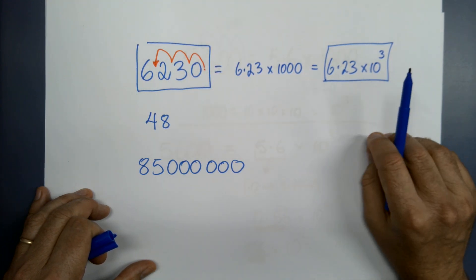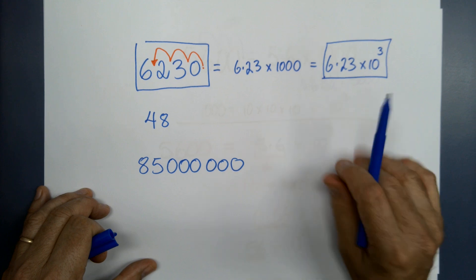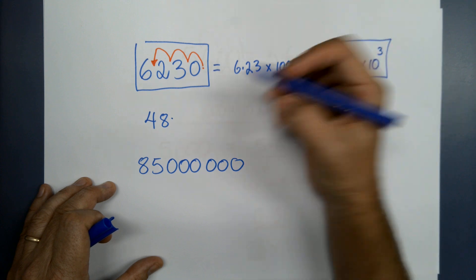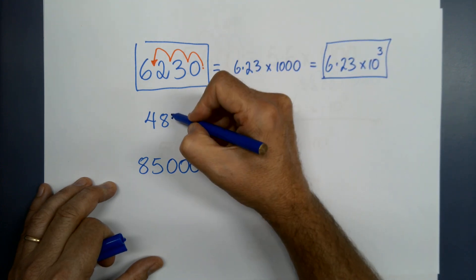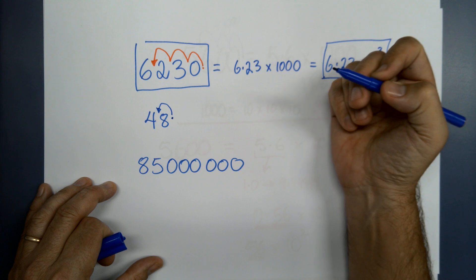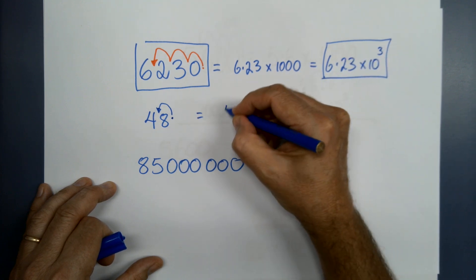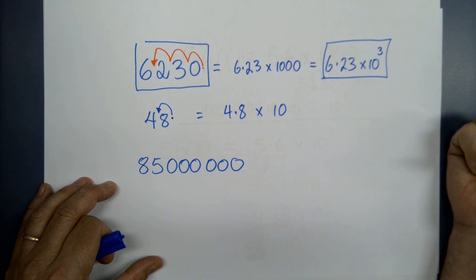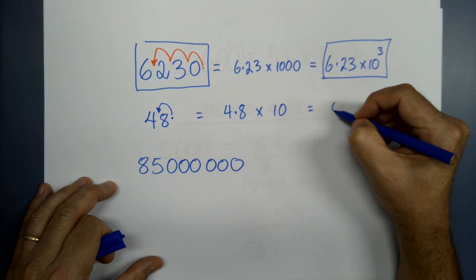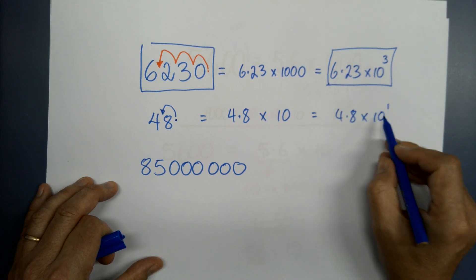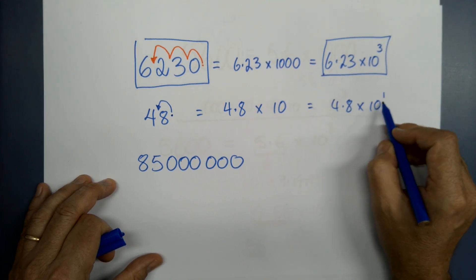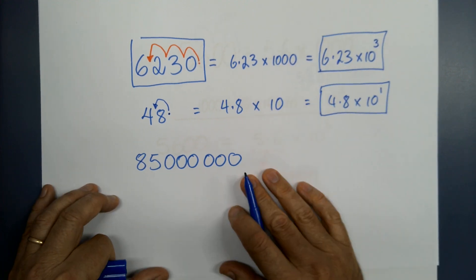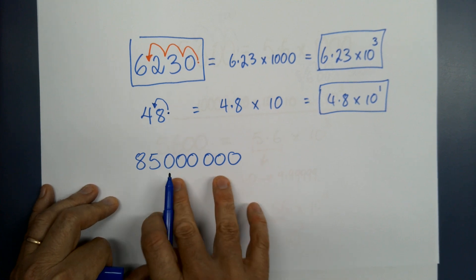You can do it with any number — let's do it with one you ordinarily probably wouldn't, because it's already a usable size. There's my decimal point and I've got to jump it one place to there. So that's actually 4.8 times ten to the power of one — it's only one jump, so there's only one of them.